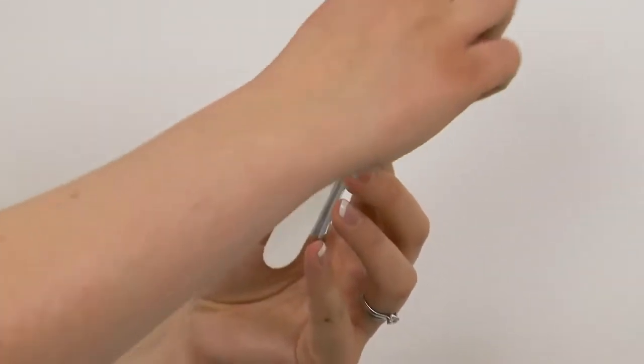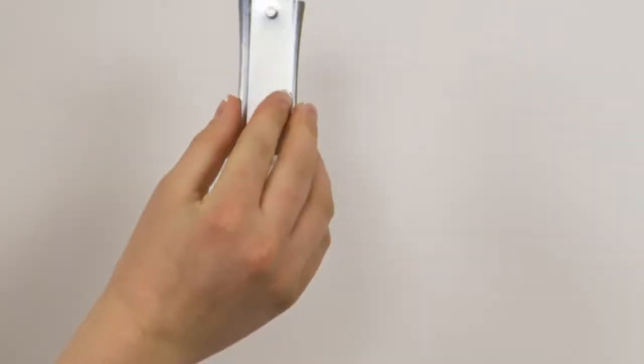Next, peel off the black printed liner and press the sticky nail firmly against the wall for 30 seconds.